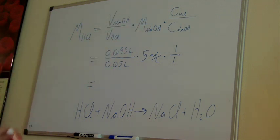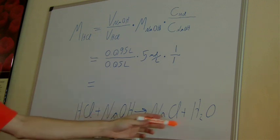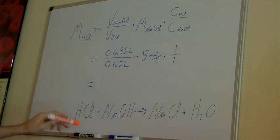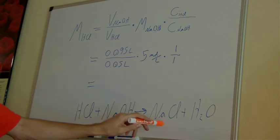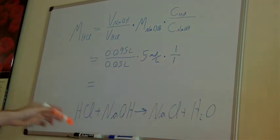And the coefficients I got from the balanced chemical equation here of hydrochloric acid plus sodium hydroxide yields salt and water. And both of those only have coefficients of one. There's nothing else there. So that ends up equating to one over one. So you can ignore that.